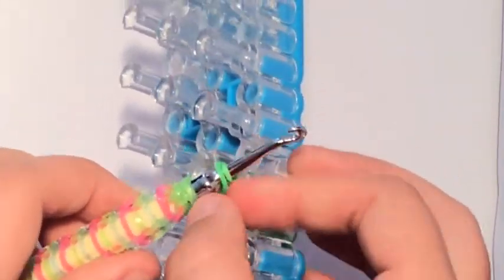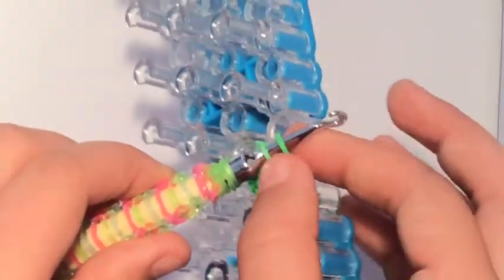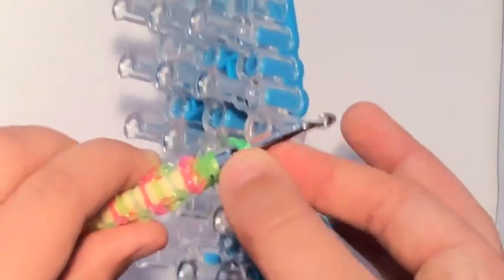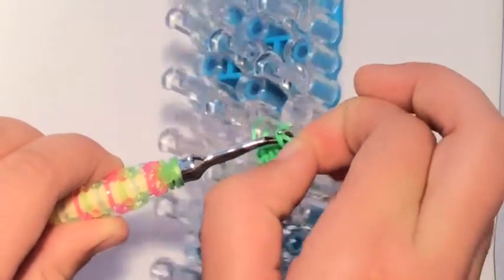When you're going to take it up the tube and then when you've got it on the hook like that you're going to take it like this and then grab that band so you're creating a slip knot.